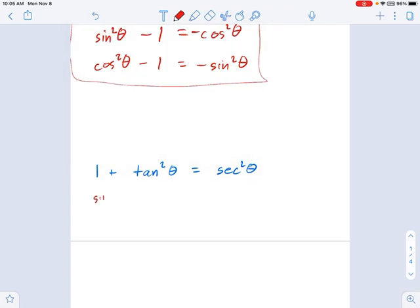I could say sine squared theta plus cosine squared theta equals 1. What if we divide both sides by cosine squared? Let's see what happens. So divide both sides by cosine squared. Everything.